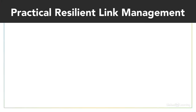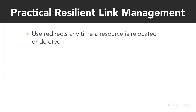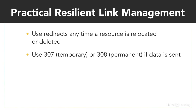Here's my recommendation to make all of this practical and make resilient links. Number one: anytime you move a resource to a new location, use a redirect to ensure visitors using the old URL actually get the resource they're looking for. In most cases, this will be either a 301 or a 308 redirect. Number two: if you're sending data, use either a 307 temporary or 308 permanent redirect, because that preserves the intent of the original request.